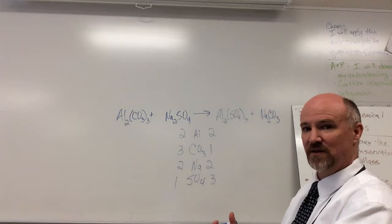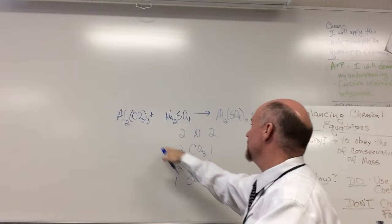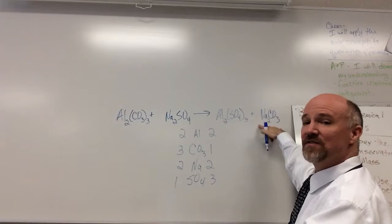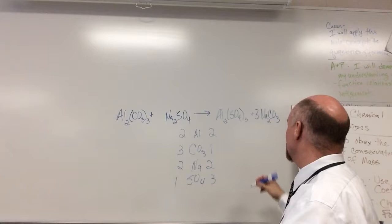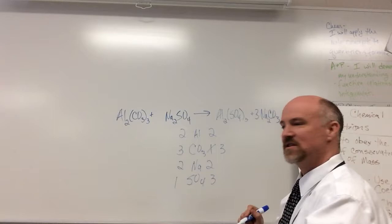Now I have to put in coefficients. I have to figure out the recipe. If I have three groups of CO3 over here, I need three over here. So how many packages of Na2CO3 do I need to buy? How many do I need? I need three. Because now that gives me three groups of CO3. But it changes something else.